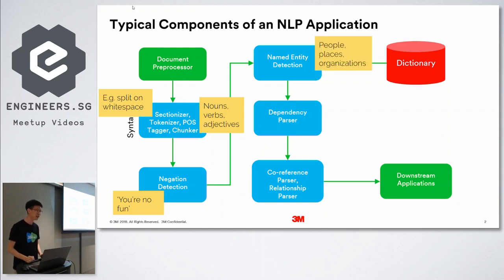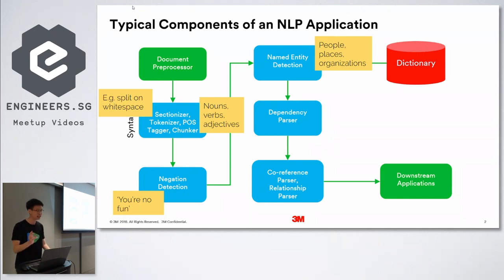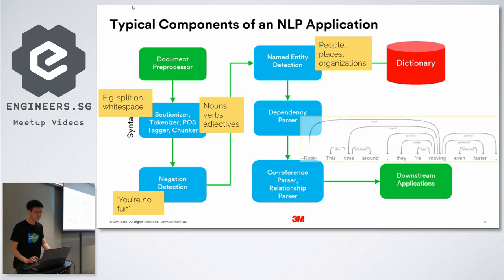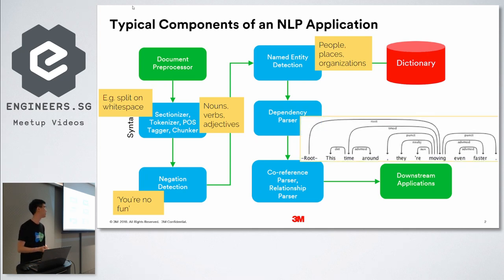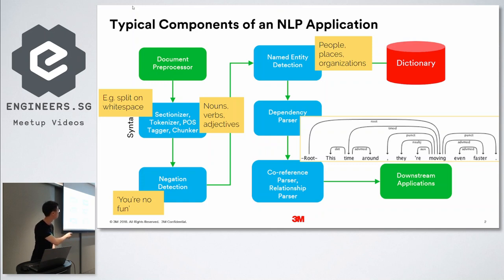It then does a further classification into people, places, and organizations. For more advanced systems, they do some kind of dependency parsing in which they identify relationships between the words in a sentence.